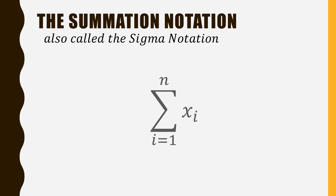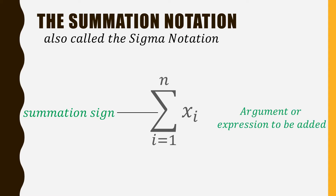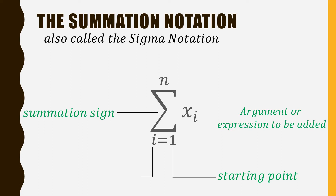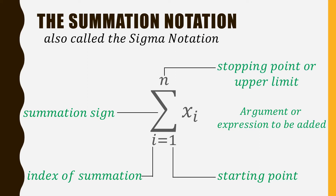Let us understand all the elements and components of this notation. The first one is the summation sign or the Greek letter sigma. Next is x sub i — it can be any argument or any expression to be added. Next, we have 1, which is our starting point. Most of the time it is 1, but occasionally it can be any other counting number. Next, we have i, which is our index of summation. Next is n, our stopping point or upper limit.